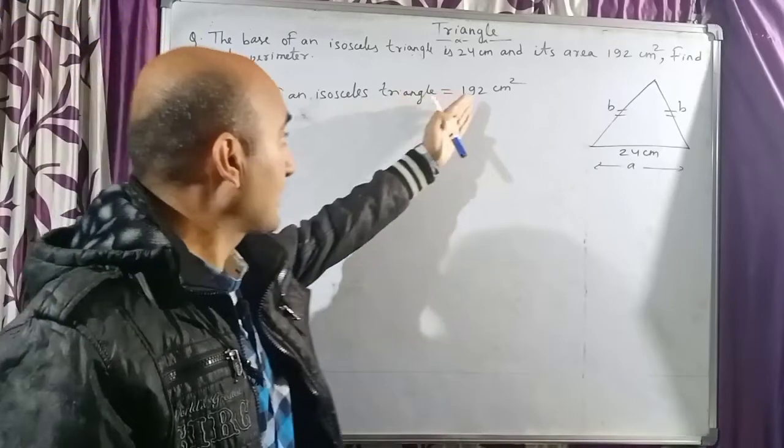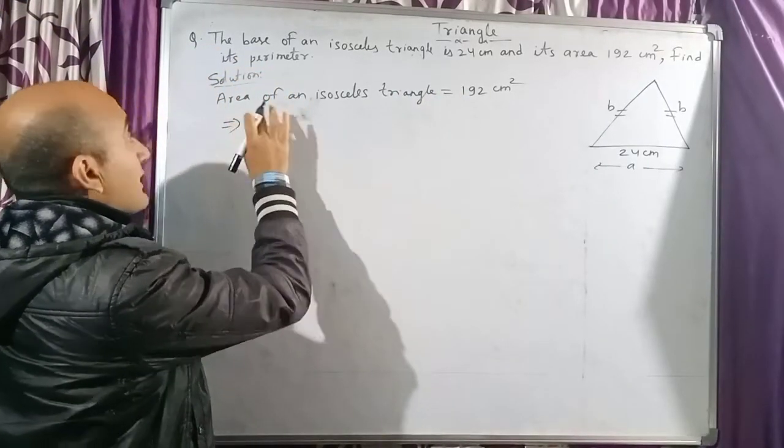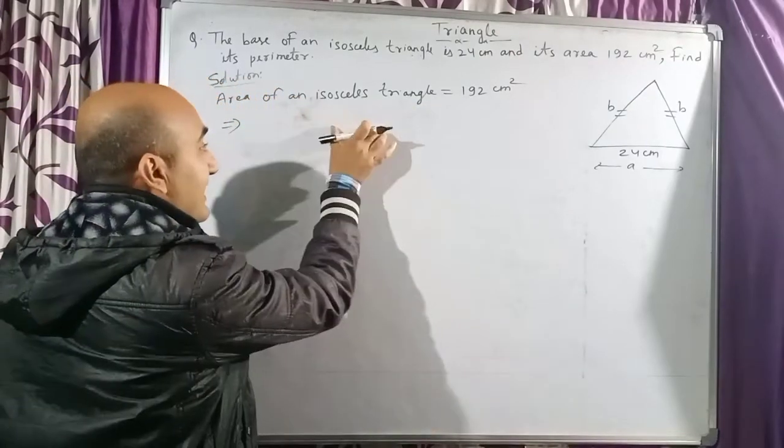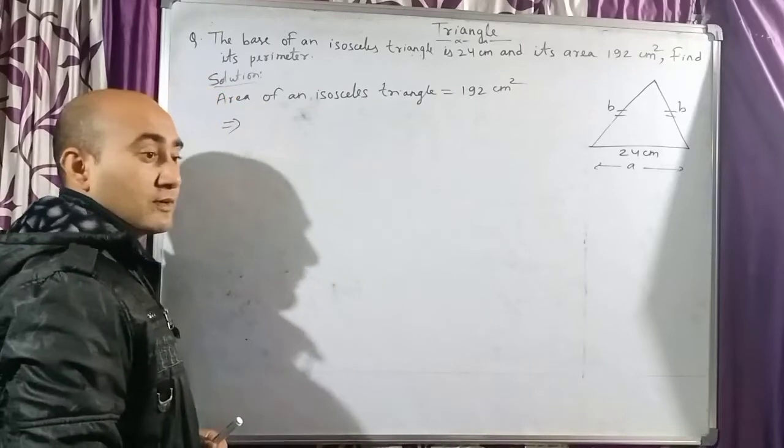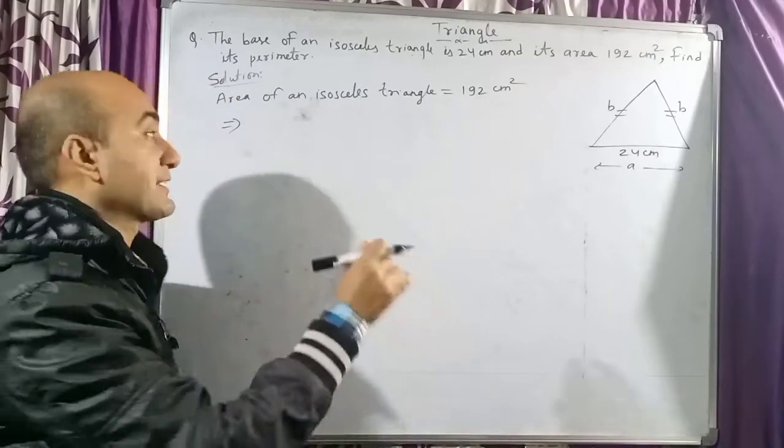Children, I have said to you all several times: whenever the area's value is given, in the next step what you do is write the formula of area of isosceles triangle here, equal to the value, and then whatever value to put you put it and what to find you find it.